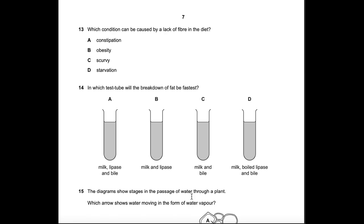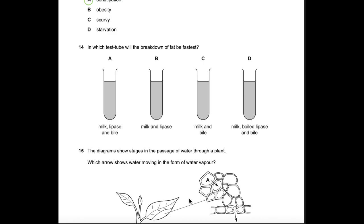Question 13: Which condition can be caused by a lack of fiber in the diet? Fiber stimulates peristalsis, so a lack causes constipation — answer A. Obesity results from excess food intake, scurvy is vitamin C deficiency, and starvation is insufficient food, so none of those apply.